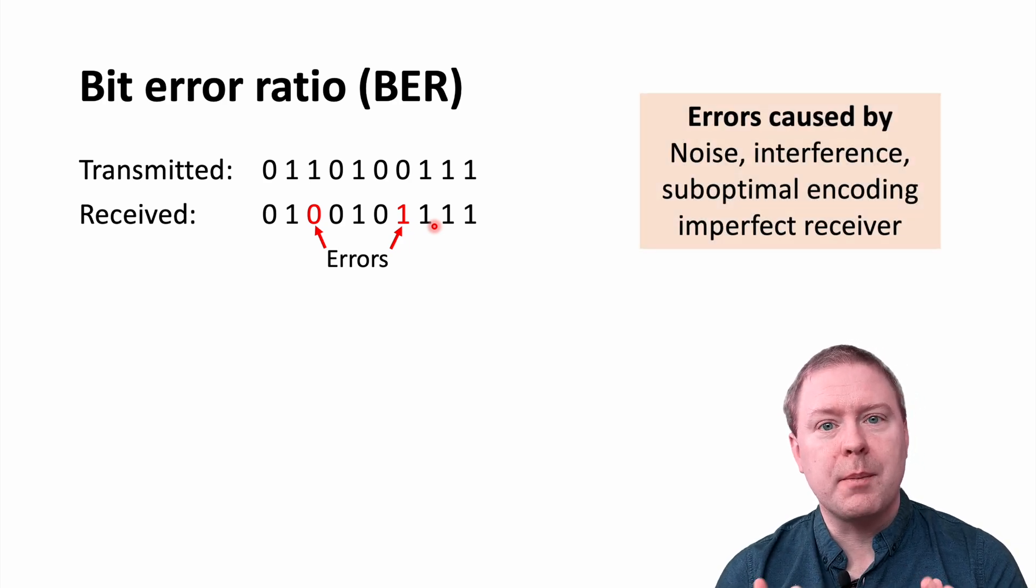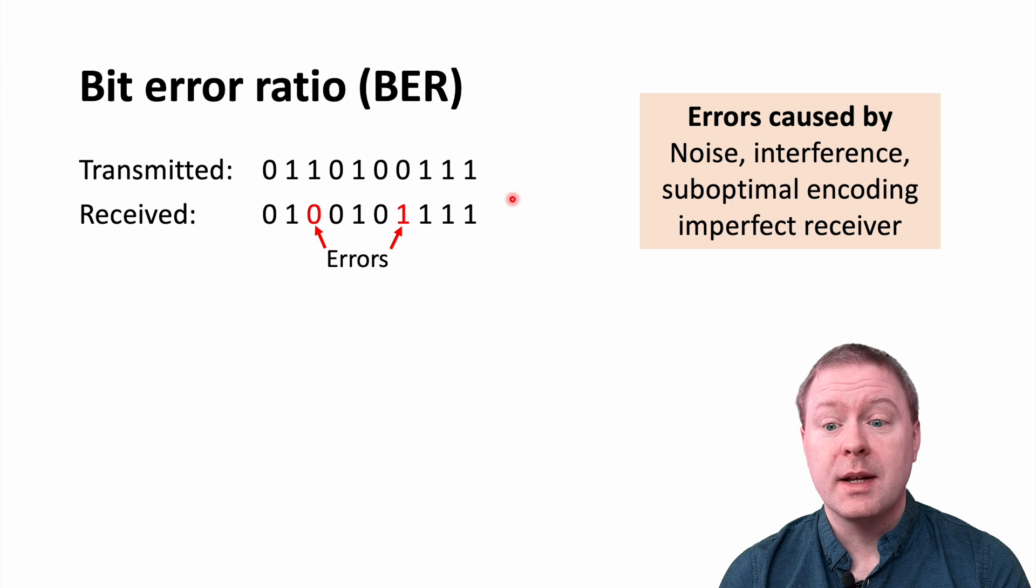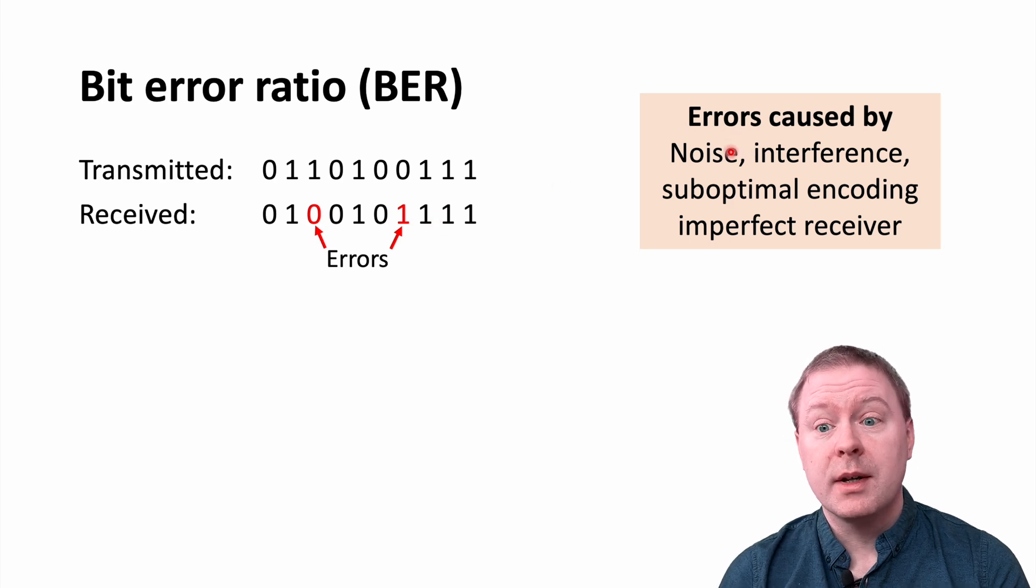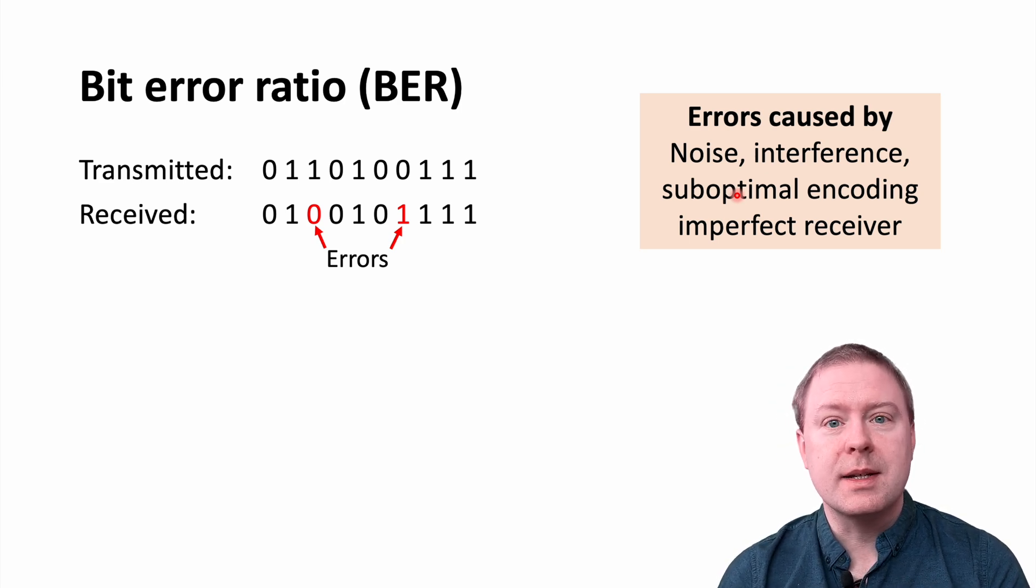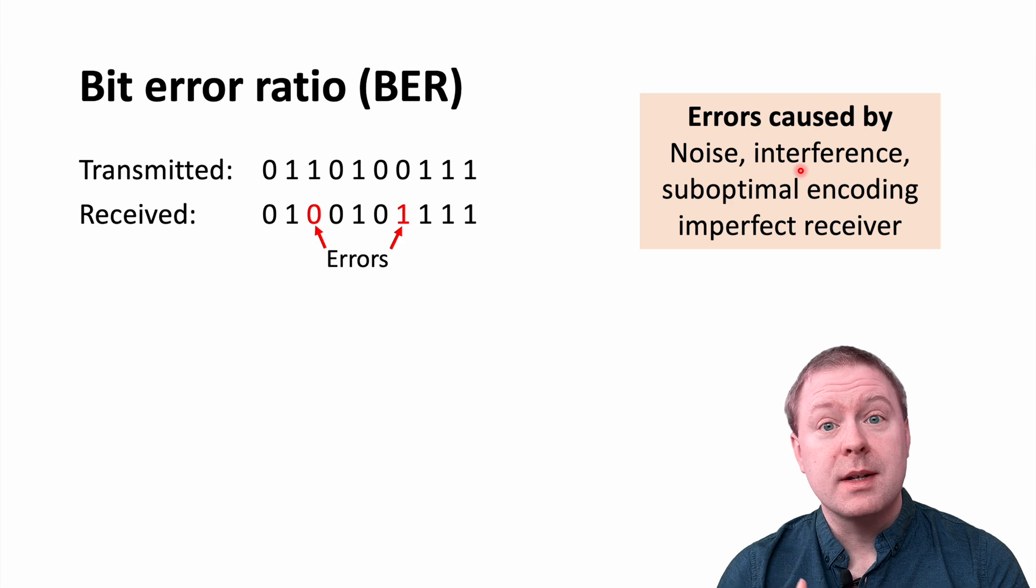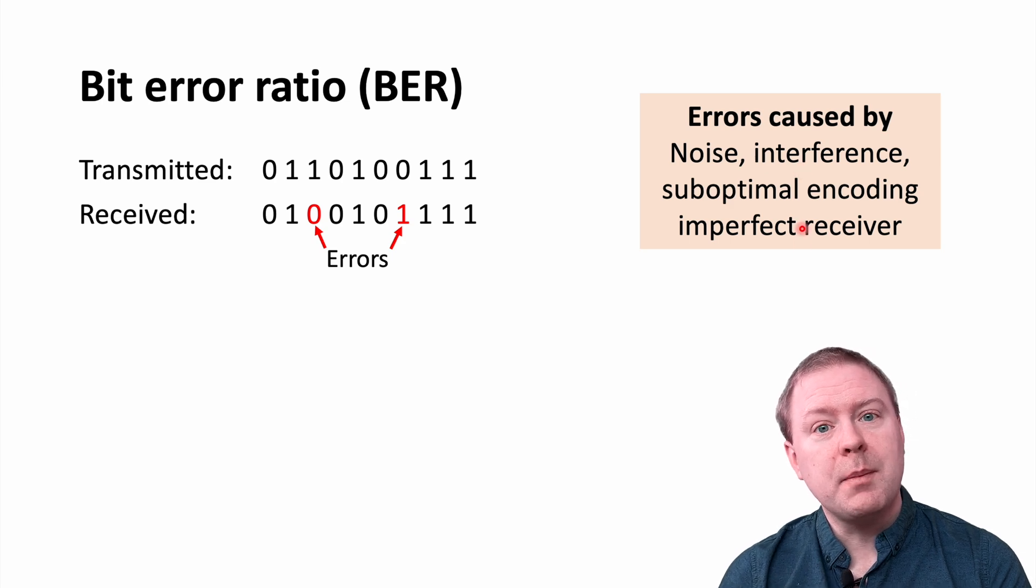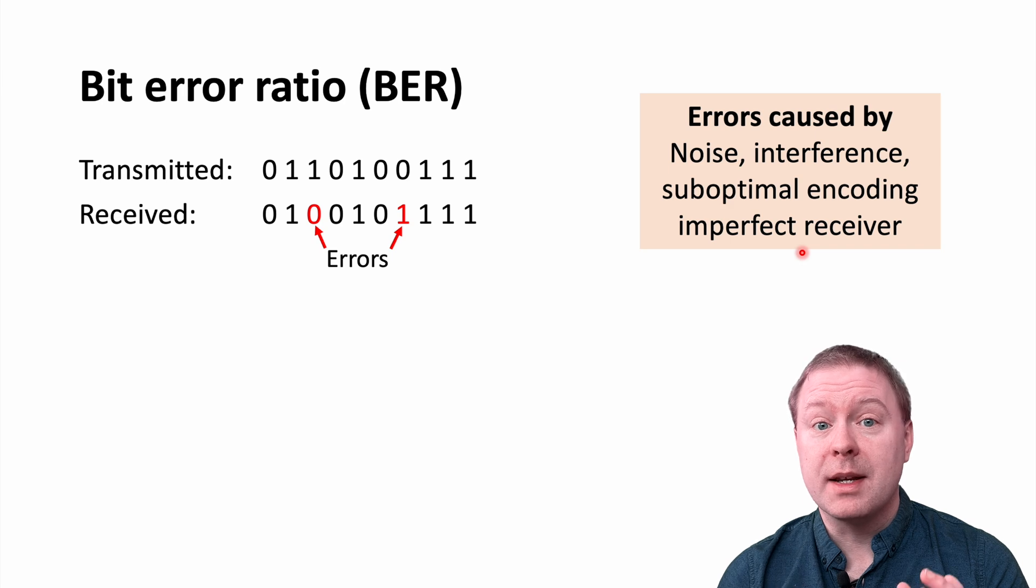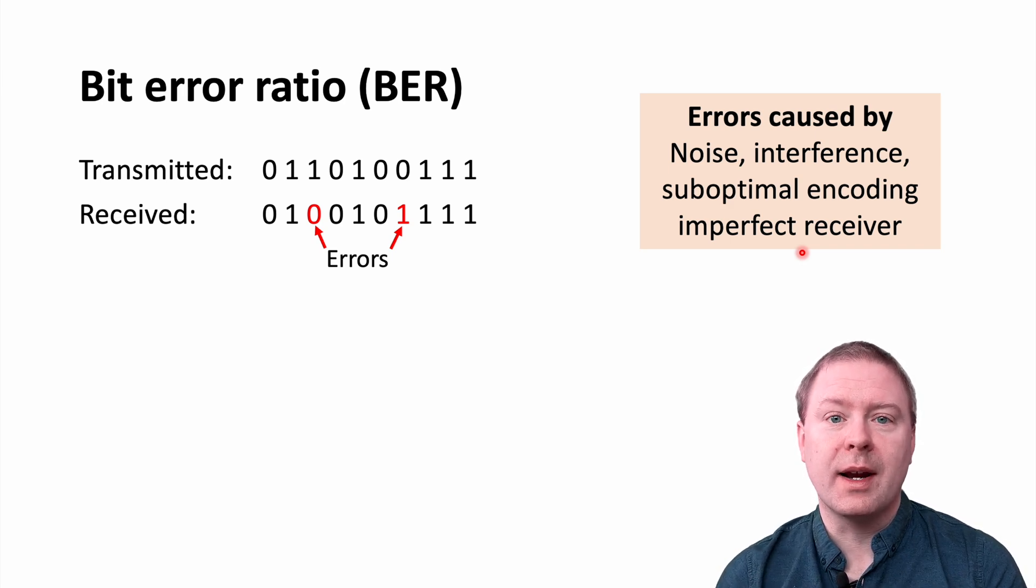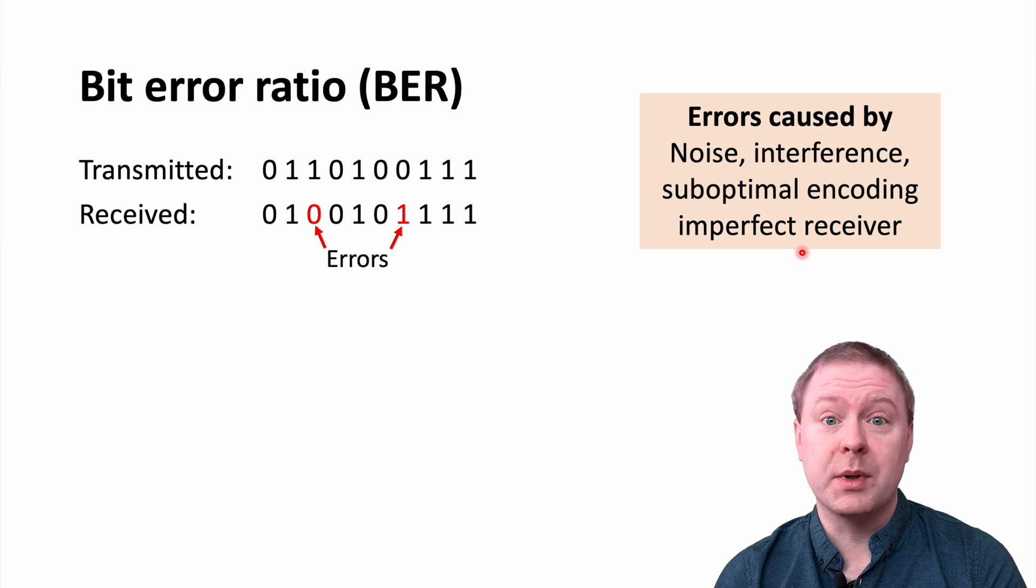These errors can be caused by a number of different things. There will be noise in the receiver. There might be interference in the system. It might be also that you have encoded your signals in a suboptimal manner, which is making noise interference sensitivity larger. And it might also be that your receiver operation is not implemented in the most optimal way, but that is also causing additional errors when you try to reduce your computational complexity.